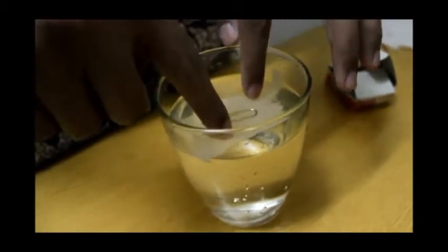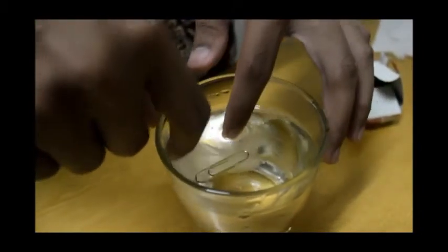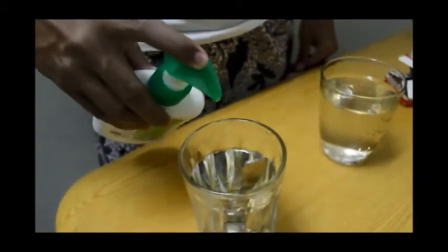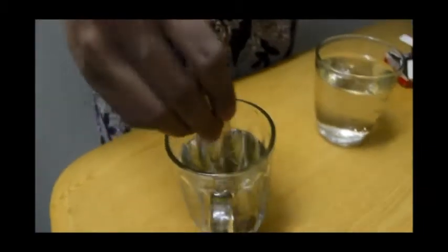When we introduce the paper clip to the surface of the water, we will see that the paper clip will float even though it is more dense than the water. This is because the weight of the paper clip is supported by the surface tension of the water. In this experiment, hand soap is used as a surfactant because it is a good example of a surfactant.